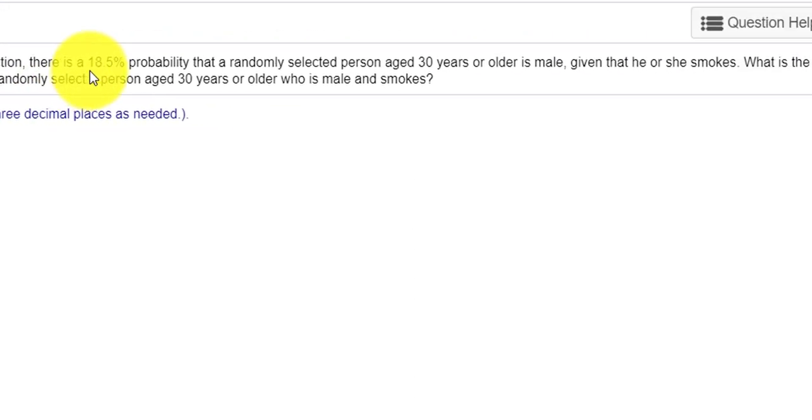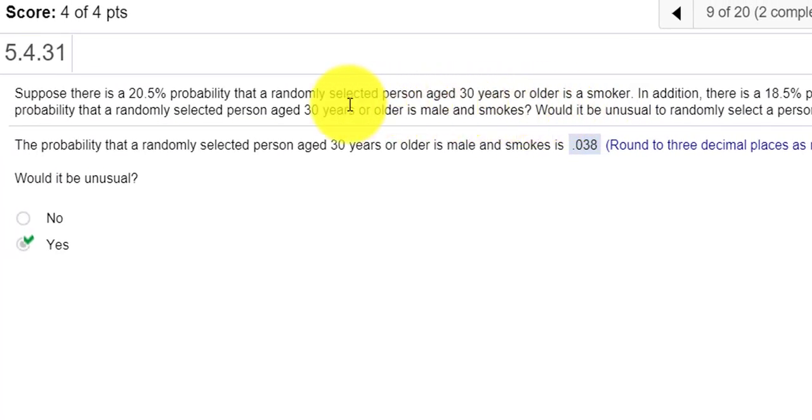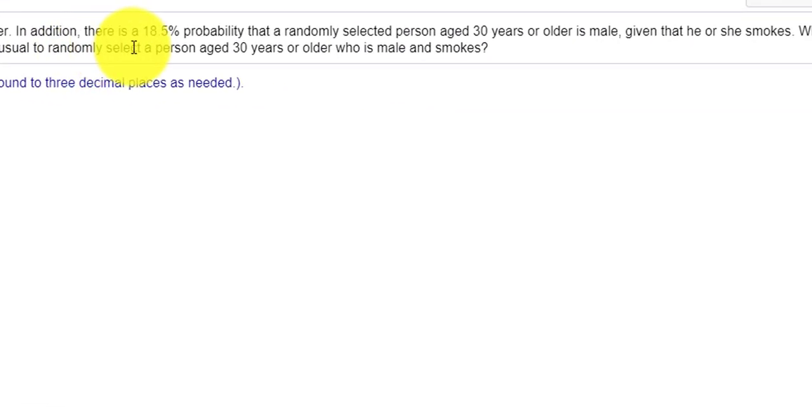And it says, there's an 18.5% probability that the randomly selected person aged 30 years or older is also a male, given that he or she smokes. Okay. So basically, men and women aged 30 or older, 20.5% chance they smoke. And an 18.5% chance that the person who is 30 years or older is a male, given that he or she smokes.